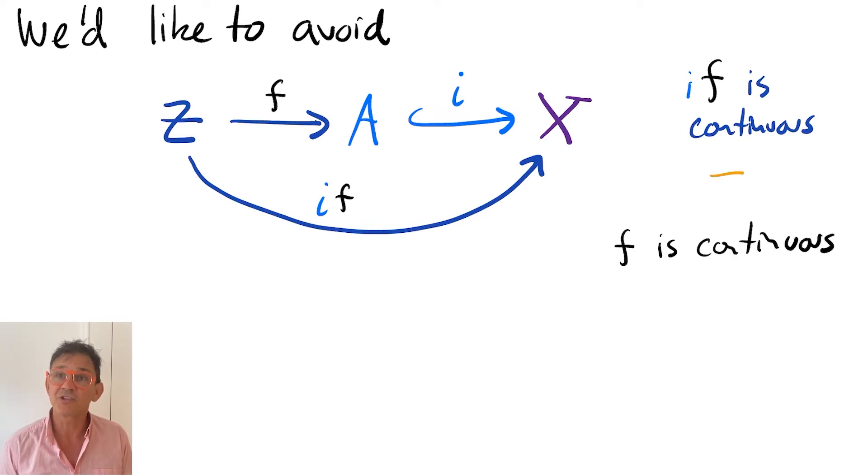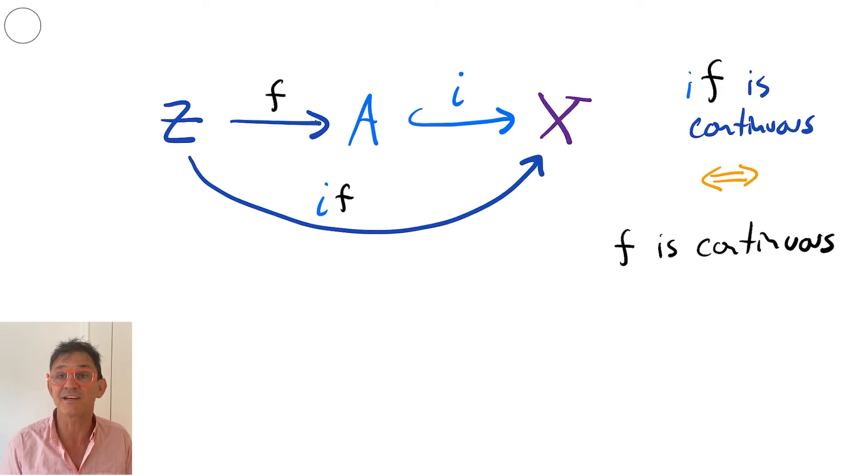Namely, for all spaces Z and all functions from Z to A, the function Z into A is continuous, if and only if the function from Z into A followed by the inclusion into X is continuous.